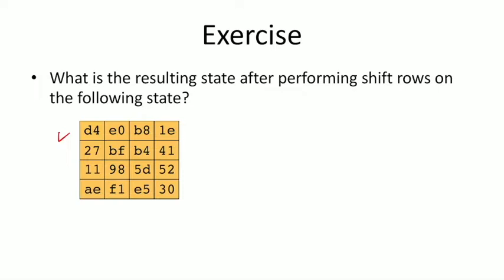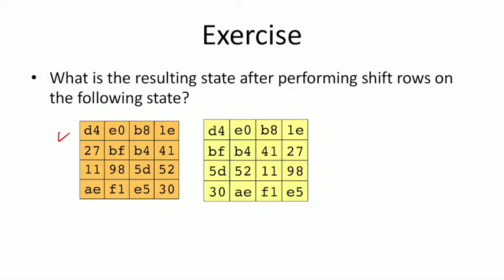Pause here and find the resulting state after performing the ShiftRows step on this state. The resultant state after ShiftRows: the first row remains unchanged; the second row is left-shifted by one, so 27 moves to the end giving BF B4 41 27; the third row shifts by two bytes moving those to the end; and the fourth row shifts by three bytes.